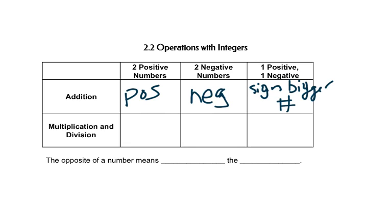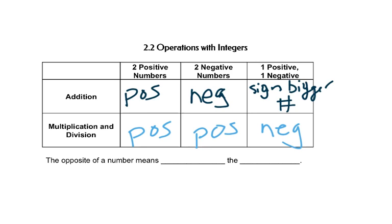Multiplication and division is different. If you have two positive numbers, you still get a positive. But if you multiply or divide two negative numbers, you also get a positive. Now, if you multiply or divide one positive and one negative, you get a negative. And for multiplication and division, it doesn't matter which number is bigger.